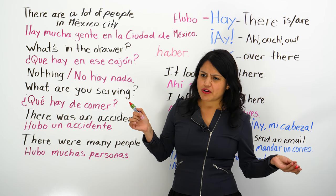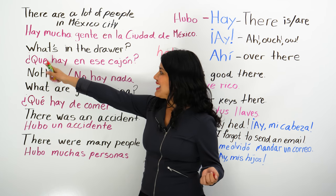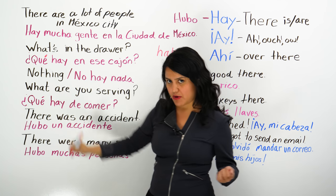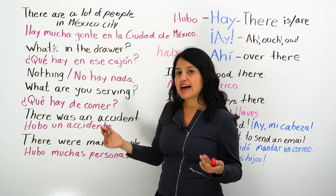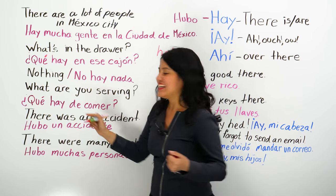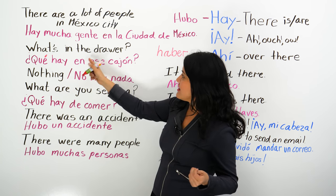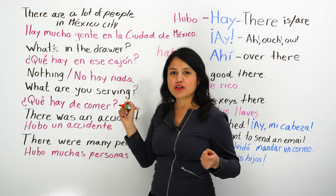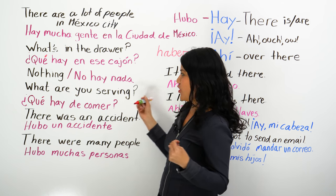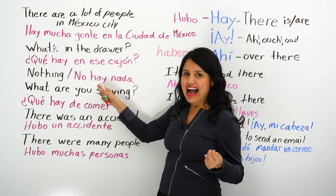You can ask, 'What's in the drawer?' — ¿Qué hay en ese cajón? When you are asking a question, always use an accent mark on 'qué.' ¿Qué hay en ese cajón? What's in the drawer? Nothing — nada. No hay nada.